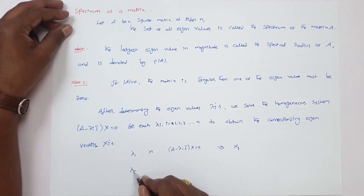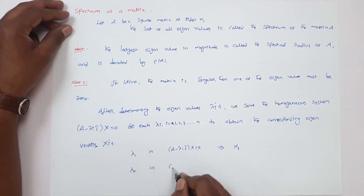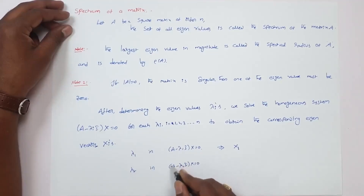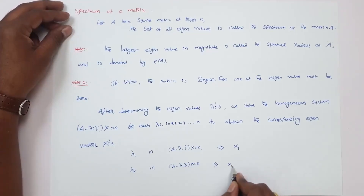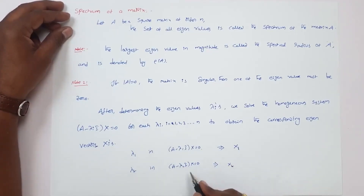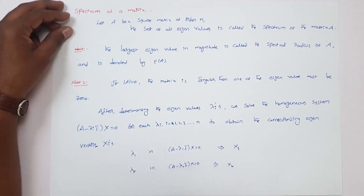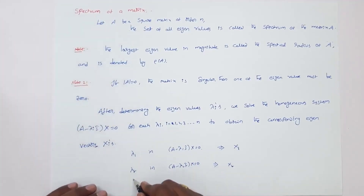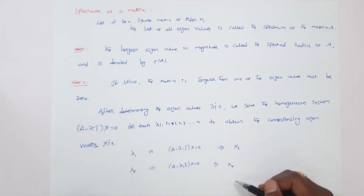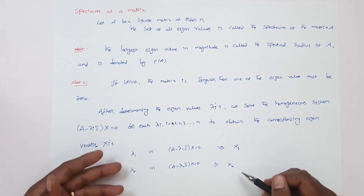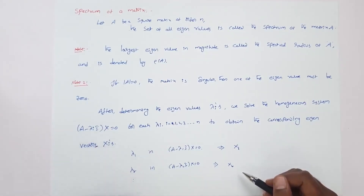Next, substitute the eigenvalue lambda_2 in (A minus lambda_2 I) times X equals zero. Solve this system of linear equations. We get a solution X_2, which is an eigenvector of A corresponding to the eigenvalue lambda_2. Similarly, find all the eigenvectors X_1, X_2, X_3, and so on through X_n, corresponding to the eigenvalues lambda_1, lambda_2, lambda_3, and so on through lambda_n.